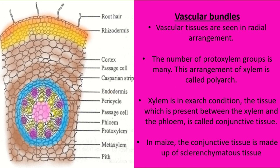The xylem is exarch — meaning metaxylem (large-sized xylem) faces towards the center, and protoxylem (smaller-sized xylem) faces towards the rhizodermis, that is the periphery. The yellow-colored cells in the vascular bundle are xylem cells and the purple-colored cells are phloem cells. The cells in between the xylem and phloem are called conjunctive tissue, which is sclerenchyma tissue.